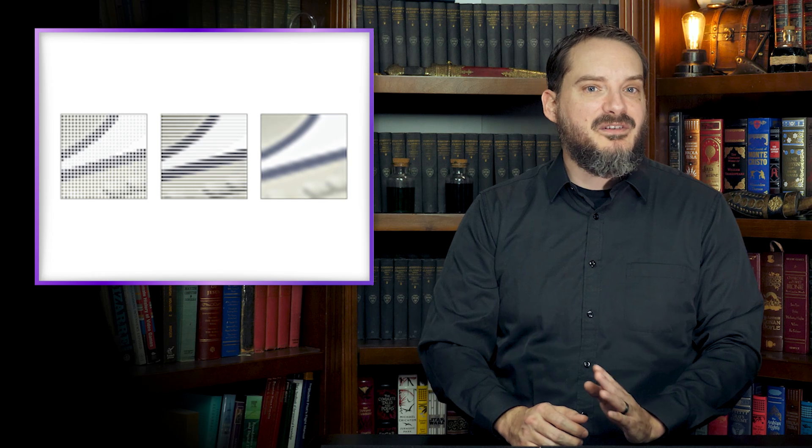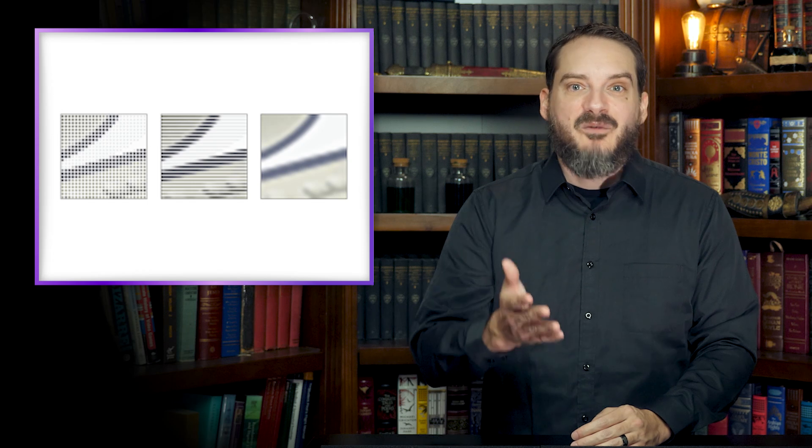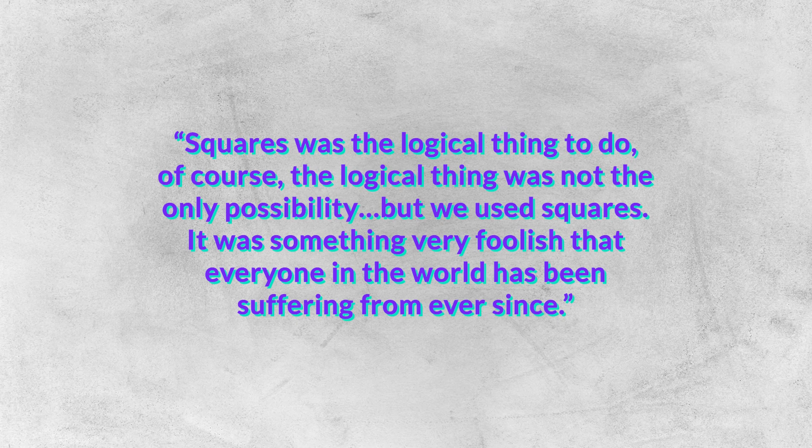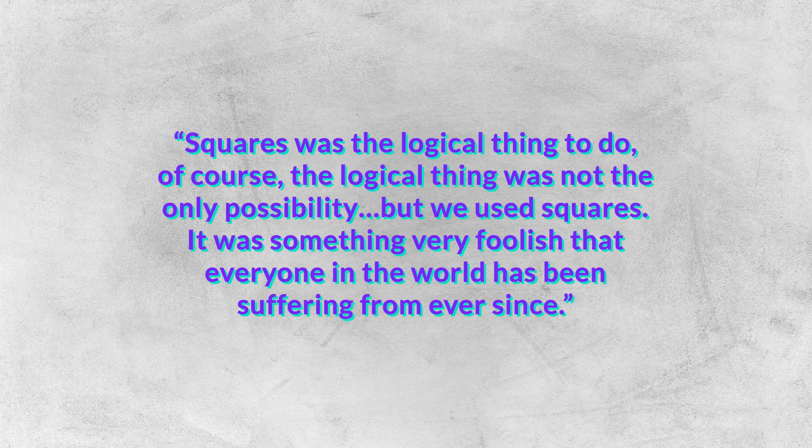But while Kirsch was proud of his overall accomplishments, he was less enthusiastic about his choice to make pixels square, which he felt hampered the resolution of digital imaging. He stated, "Squares was the logical thing to do. Of course, the logical thing was not the only possibility, but we used squares. It was something very foolish that everyone in the world has been suffering from ever since."